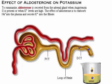To summarize, aldosterone is secreted from the adrenal gland when angiotensin II is present and/or when potassium levels are high. The effect of aldosterone is to reabsorb sodium into the plasma and secrete potassium into the filtrate within the kidney.